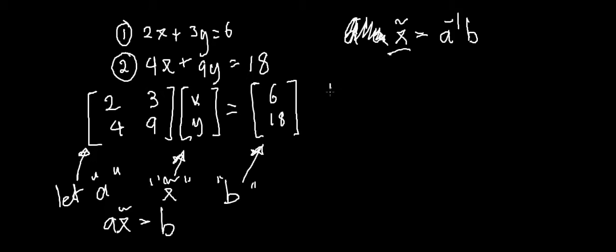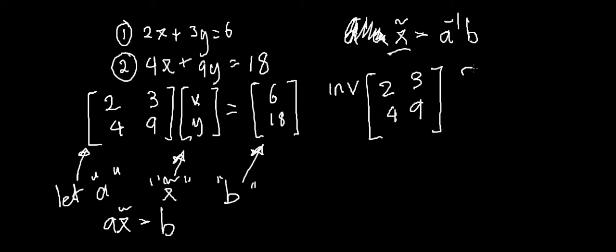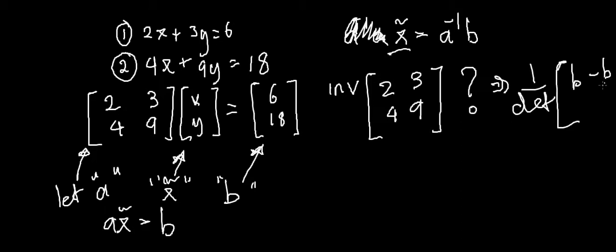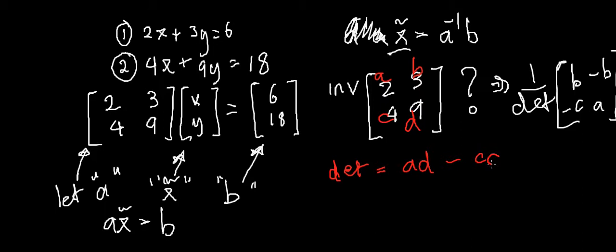So now we can go ahead and work out what A inverse is. The inverse of a 2 by 2 matrix in general is 1 over the determinant, multiplied by the rearranged matrix D, minus B, minus C, A — where A, B, C, D are the four entries. The determinant is equal to AD minus CB — the difference of the cross products.